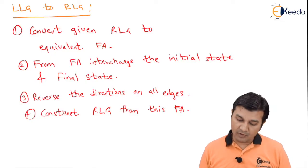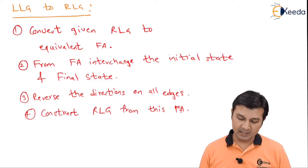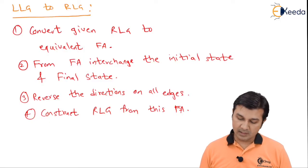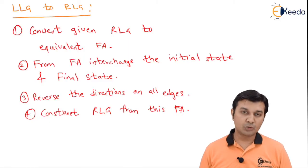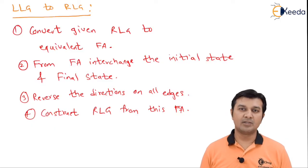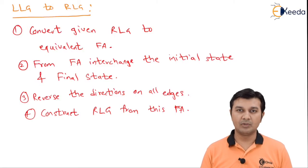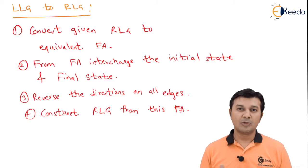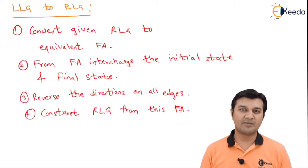Next, from the finite automata interchange the initial state and final state — that remains the same. Reverse the direction on all the edges — that remains the same. And construct RLG from this FA, which was previously construct LLG from this FA. The only difference between RLG and LLG when constructing is that the variable will be placed either to the rightmost or leftmost of the arrow. So this is essentially a revision of the previous procedure, just in the vice versa fashion.